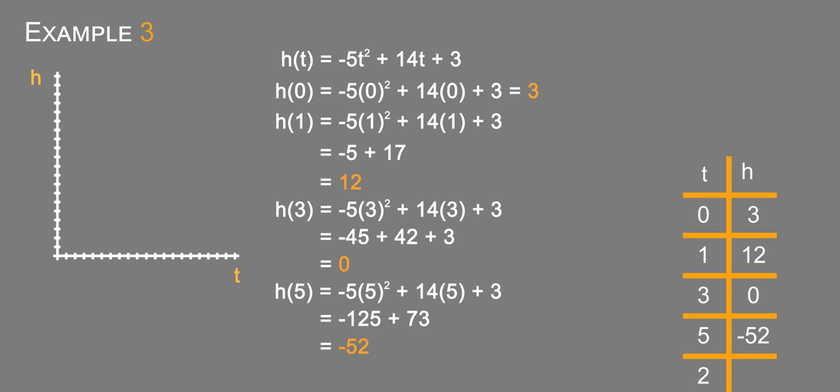So at t = 2, h(2) = -5(2)² + 14(2) + 3, which equals -5(4) = -20 plus 28 plus 3, which equals 11.